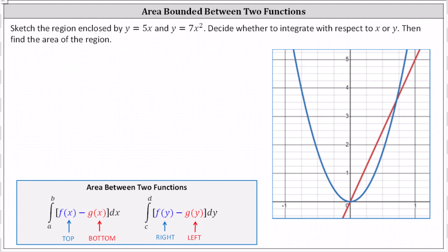We're asked to sketch the region enclosed by y equals 5x and y equals 7x squared, which I've already done here on the right. We need to decide whether to integrate with respect to x or y, then find the area of the region.